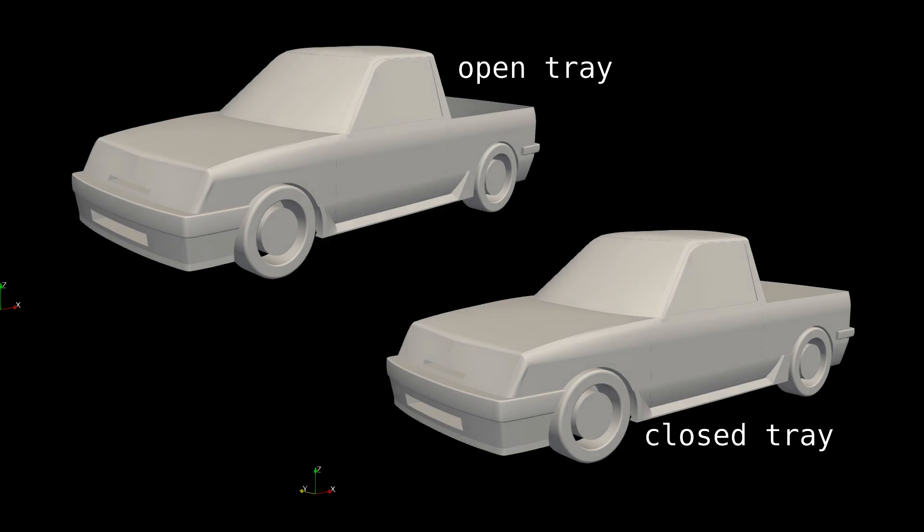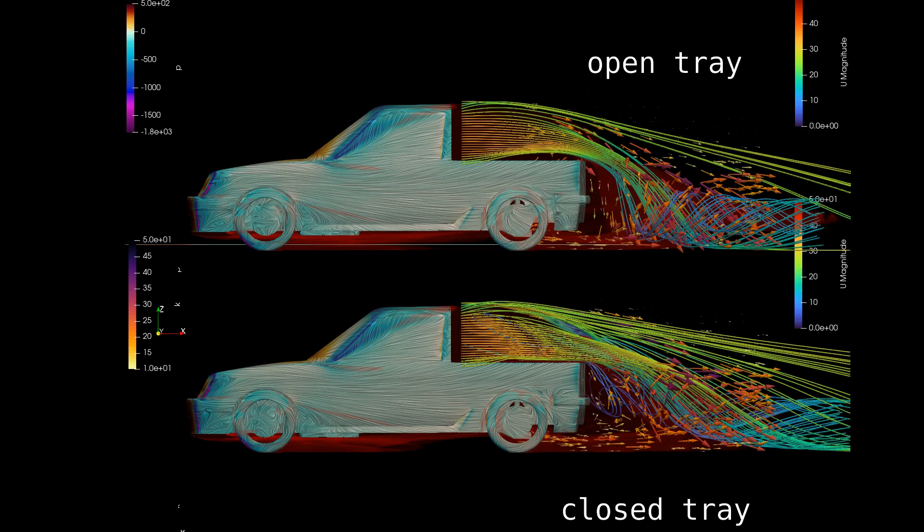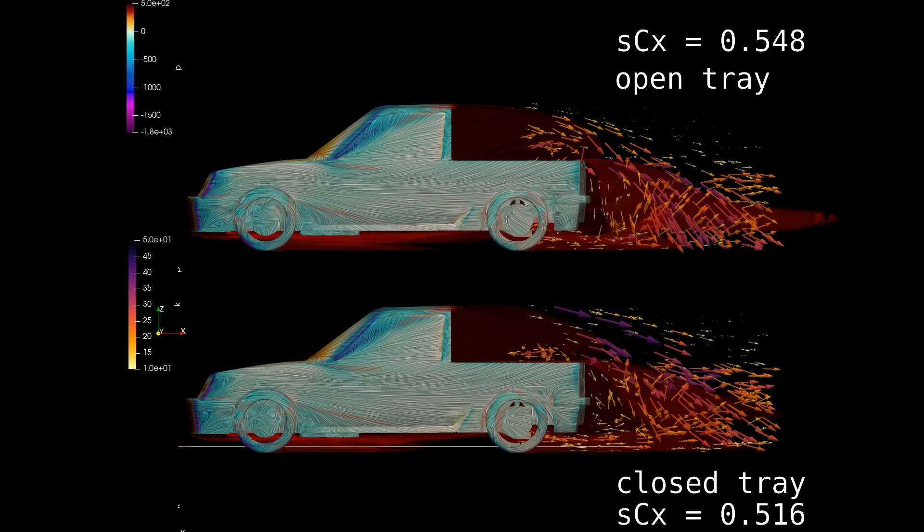Adding the bed over the tray reduces the size of the main wake structure, with inward wash along the sides. The intensity of the down wash isn't impacting the ground with as much momentum. Reducing the size of the wake usually means reducing the drag, which is happening here as well. Almost 6% less drag than the open tray. We are still 7% off where we would be if the cabin was still there.